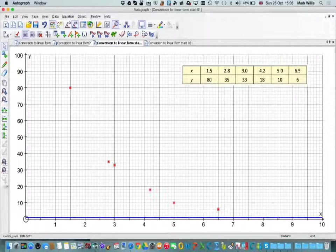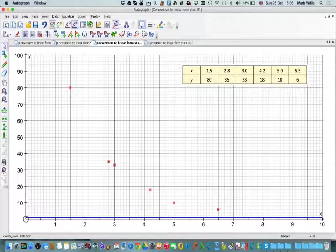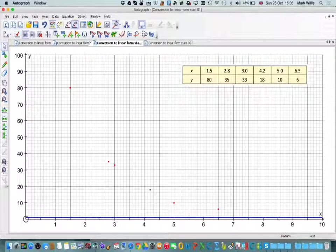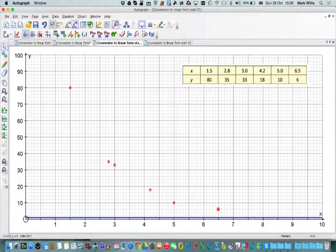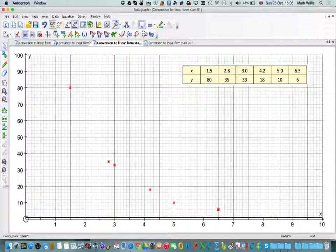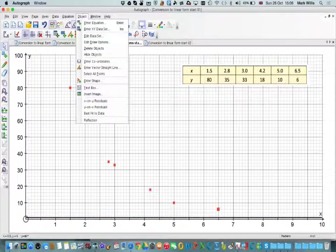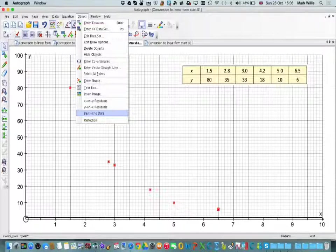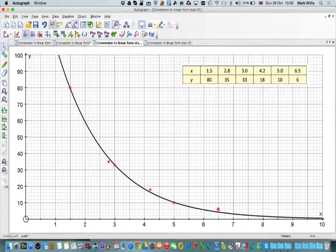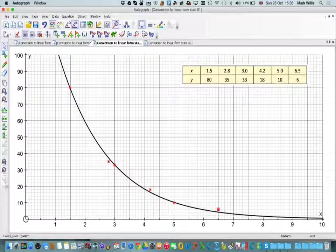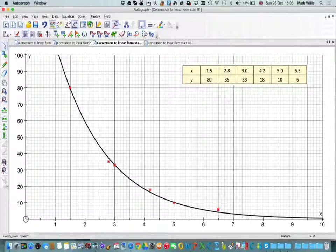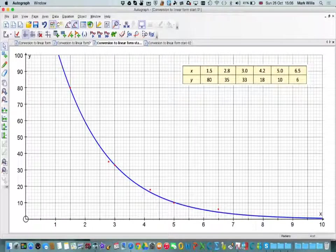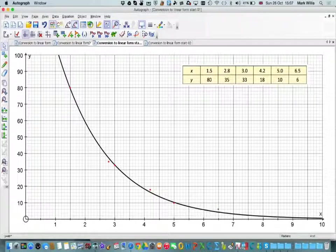It now just draws a straight line. With the points selected and the line selected, go to object or right click. You've got one here that says best fit to data. Click that and then it will do the best it can to put it into some sort of linear regression.